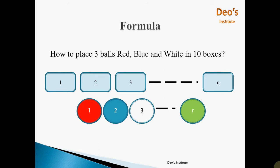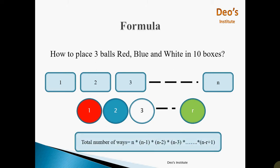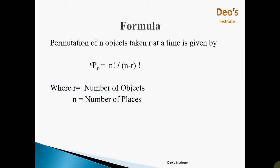In general, if there are n boxes and r balls, then the total number of possibilities to place r balls in n boxes is given by n into (n minus 1) into (n minus 2) up to (n minus r plus 1). This gives us the formula for permutation: permutation of n objects taken r at a time is given by nPr, which is equal to n factorial divided by (n minus r) factorial, where n is the number of objects and r is the number of places.